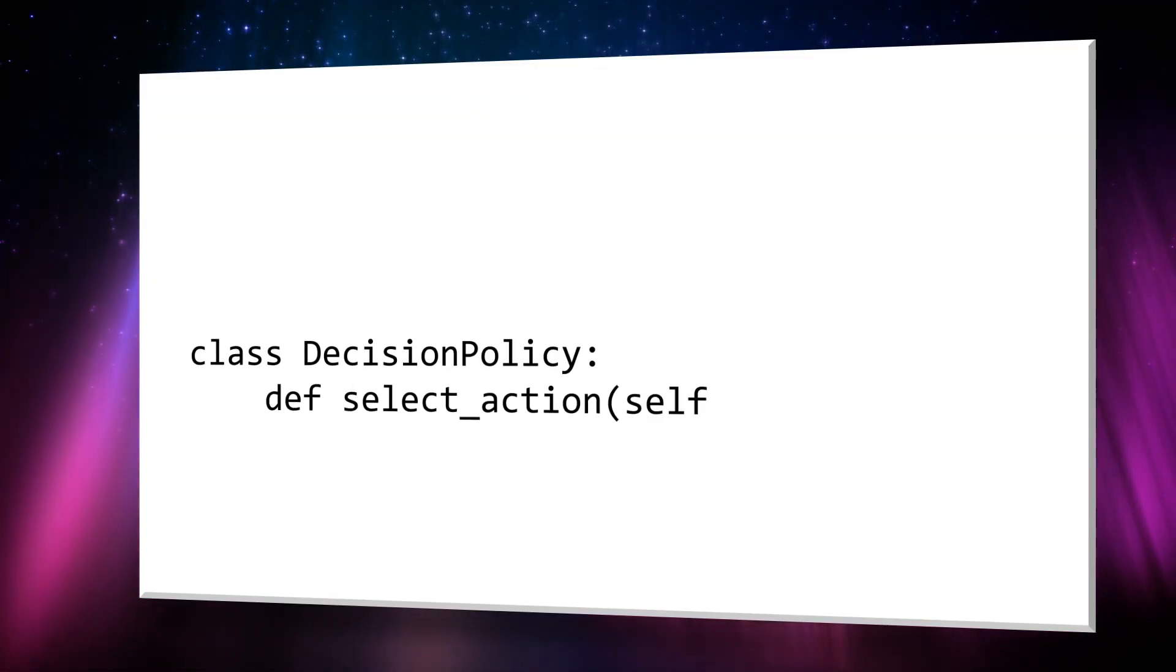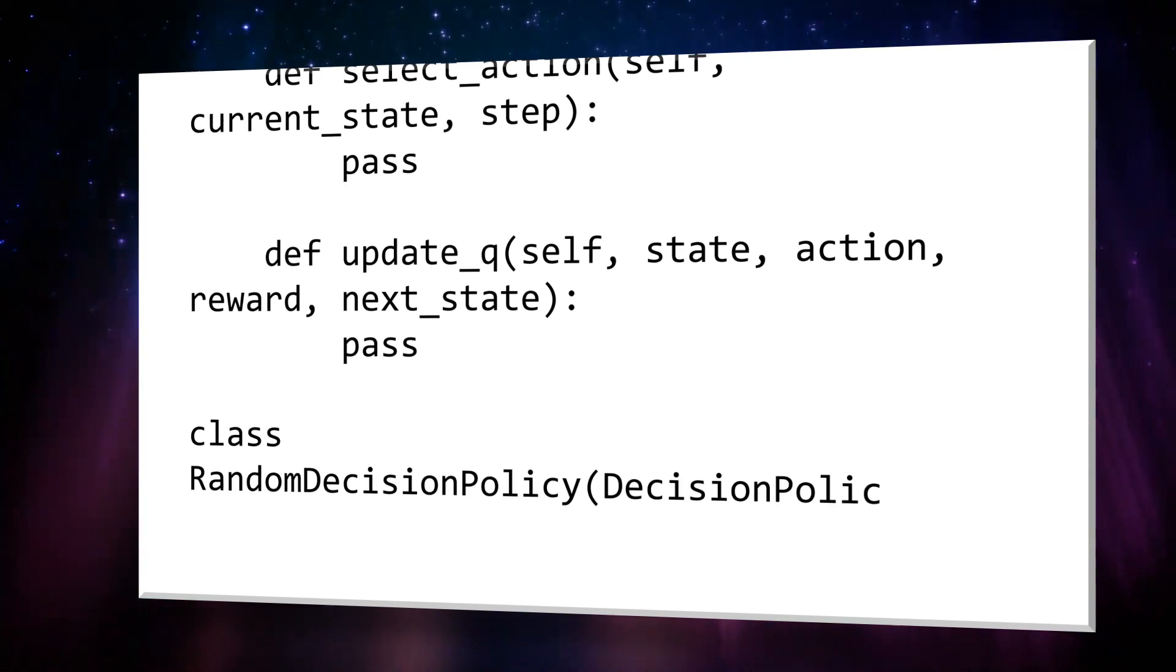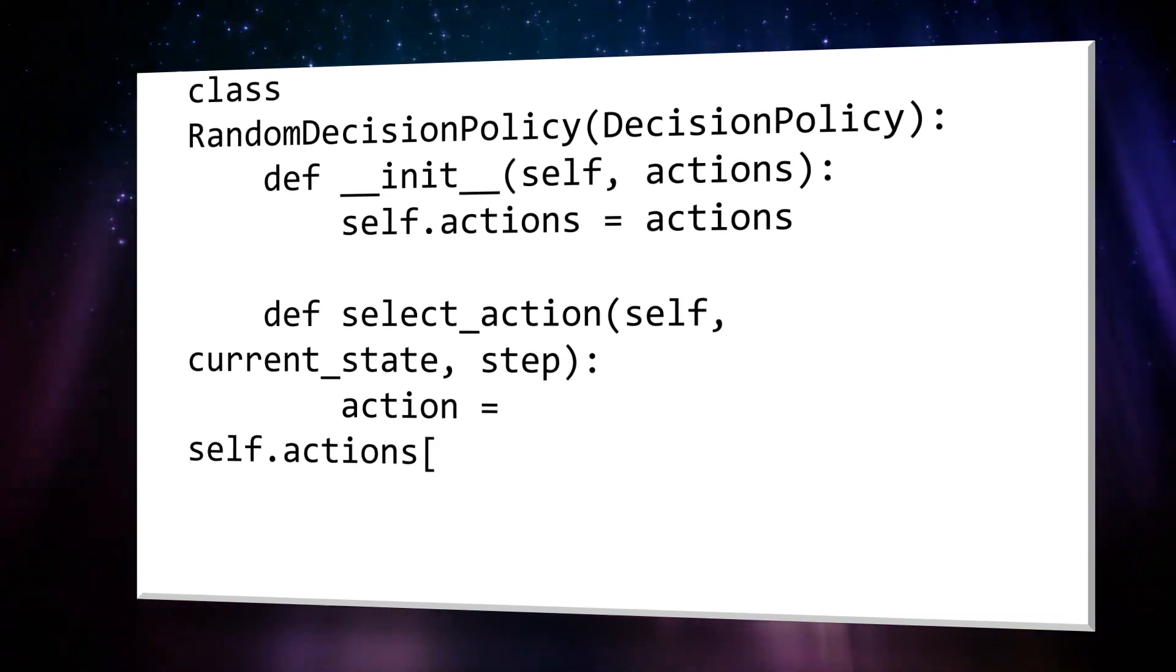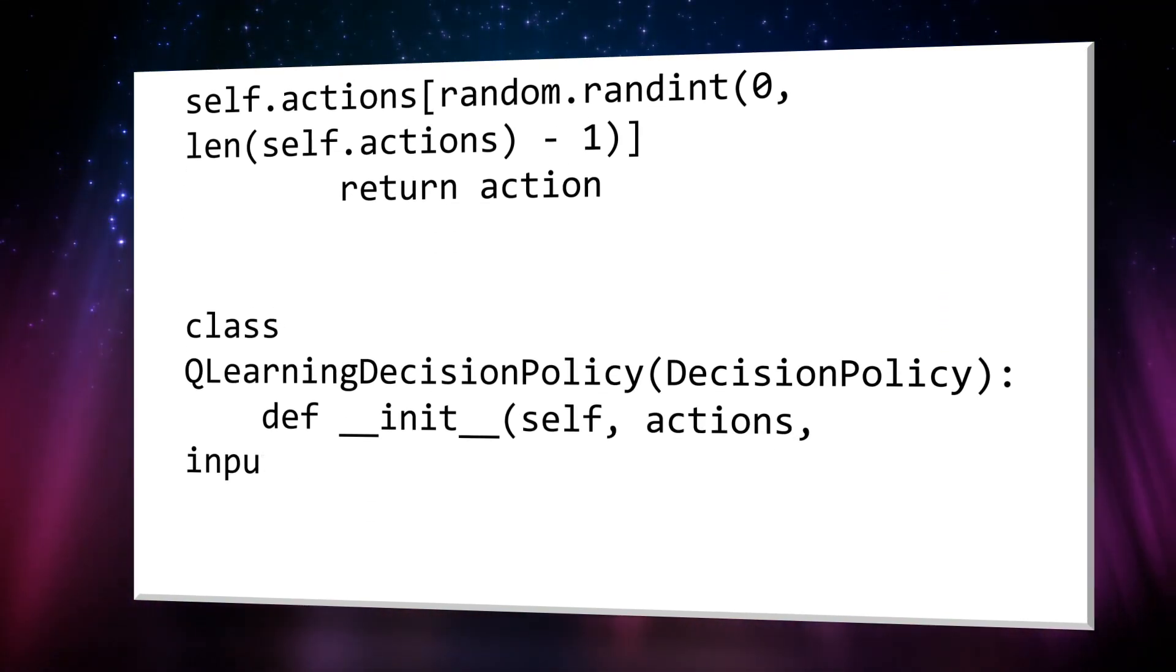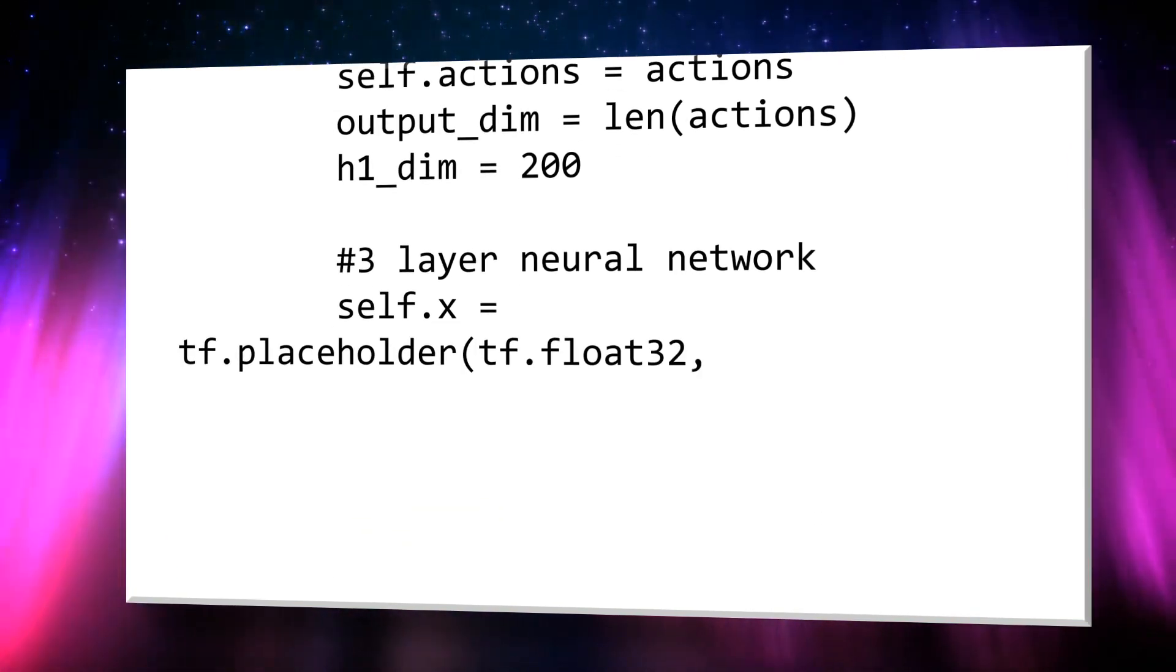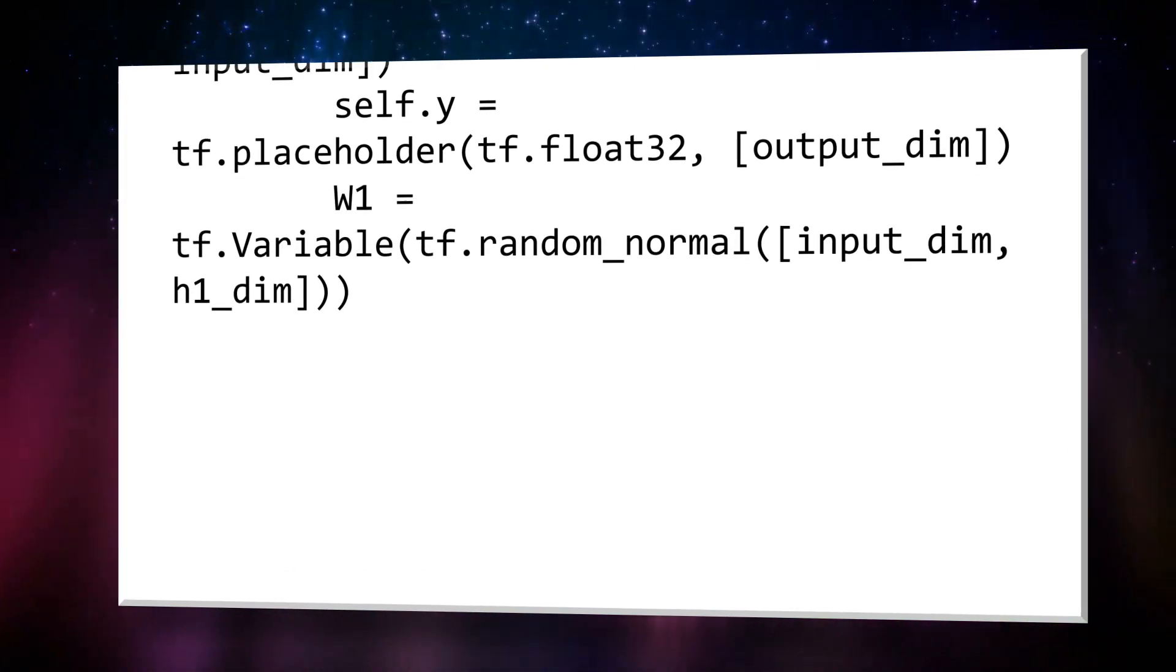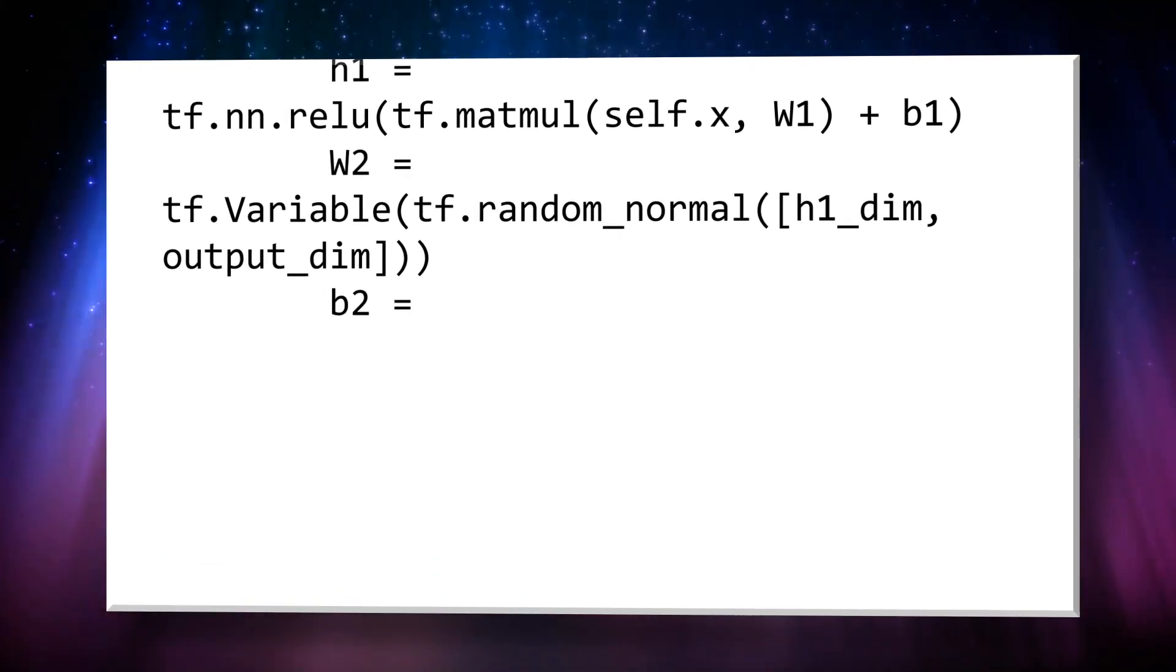Let's start implementing the decision policy based on which action the AI will take for buying, selling, or holding a stock. To start with, we'll create a random decision policy and evaluate its performance. We can do this in the general decision policy abstract class. We can then inherit from the superclass to implement a random decision policy. All it does is pick an action randomly without even looking at the state. We can definitely do better than this.